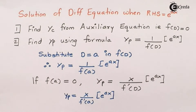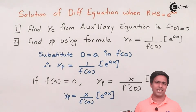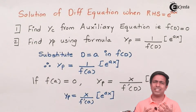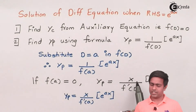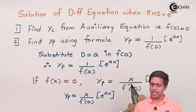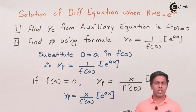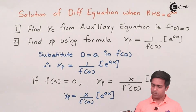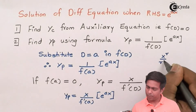Again, the same question arises — what if f'(a) is also equal to zero? If it is zero, the answer again becomes infinity. So we must find one more derivative, f''(D), and substitute D = a to get f''(a) in the denominator. In the numerator, we write x² / 2! instead of x. There is a general formula: the numerator term is x^r / r!, where r is the number of times we have differentiated f(D).